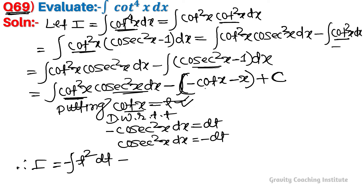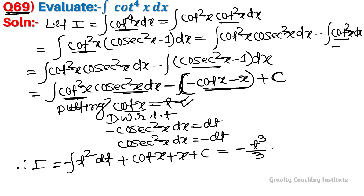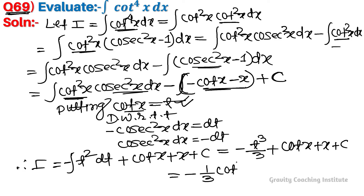Substituting back t equals cot x, the final answer is: I equals minus cot cube x upon 3 plus cot x plus x plus c.